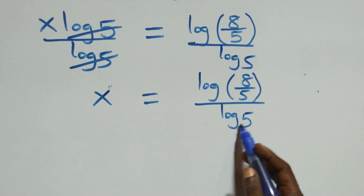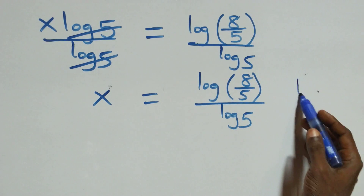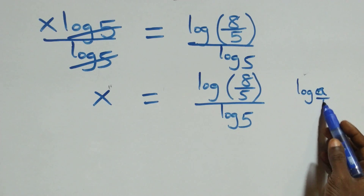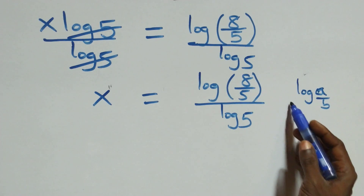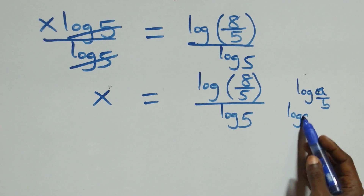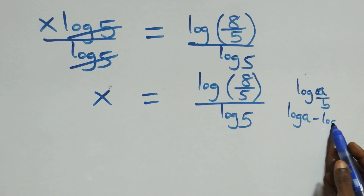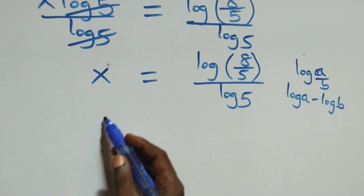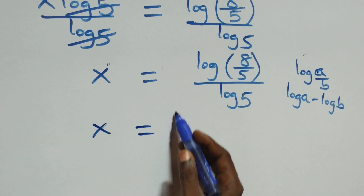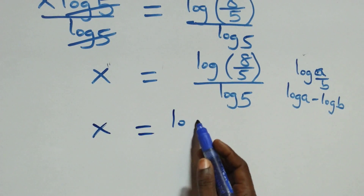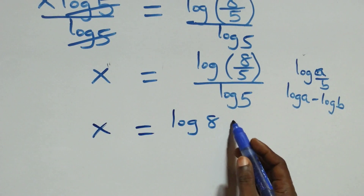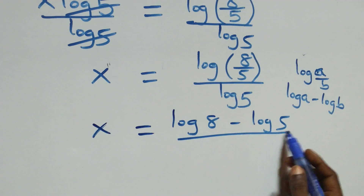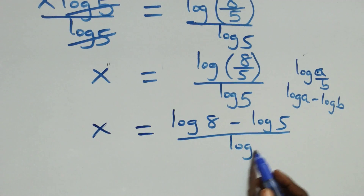From here, we apply the law of logarithms: log(a/b) is the same as log a minus log b. So what we have becomes x equals log 8 minus log 5, all over log 5.